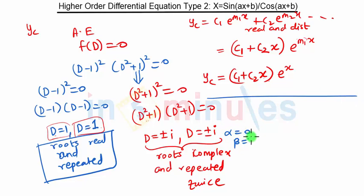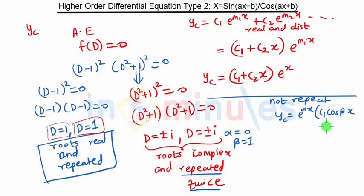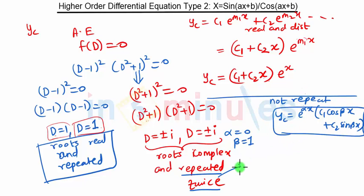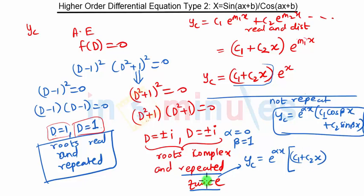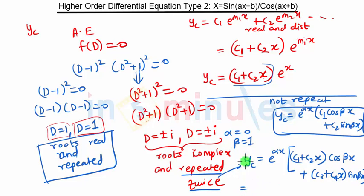For the complex roots, α = 0 and β = 1. For non-repeating complex roots, yc = e^(αx)·[c1·cos(βx) + c2·sin(βx)]. But since these roots are repeated twice, we modify it: yc = e^(αx)·[(c1 + c2·x)·cos(βx) + (c3 + c4·x)·sin(βx)], multiplying one constant by x because the roots are repeated.